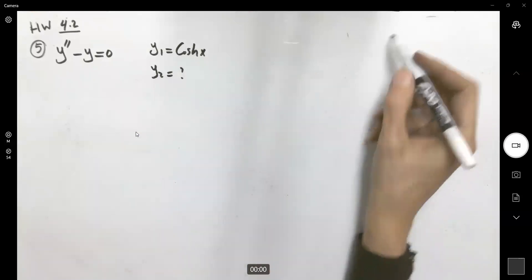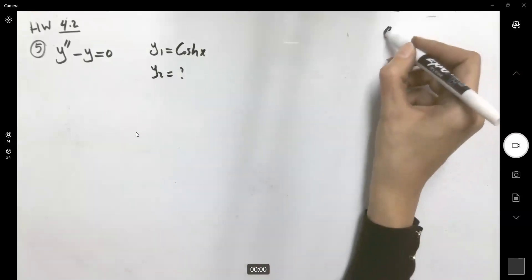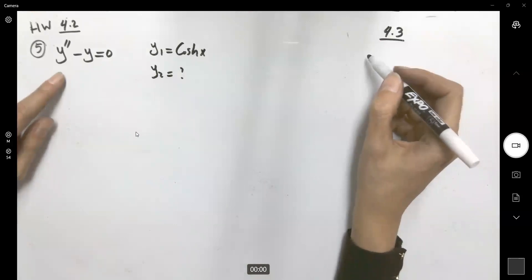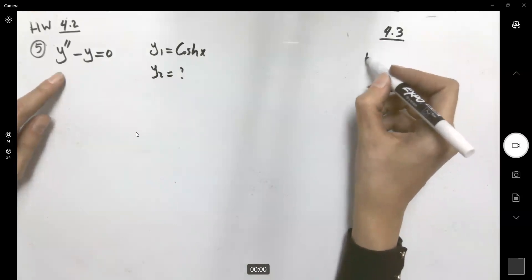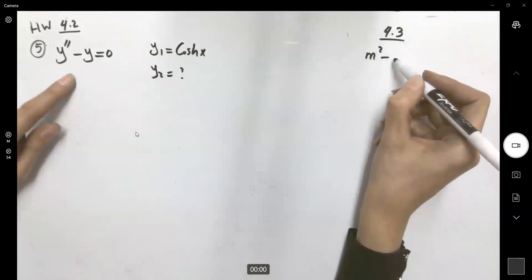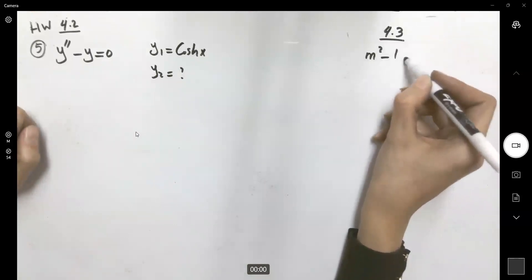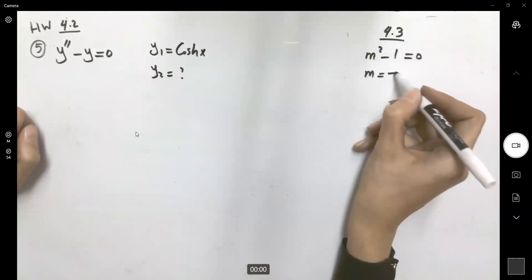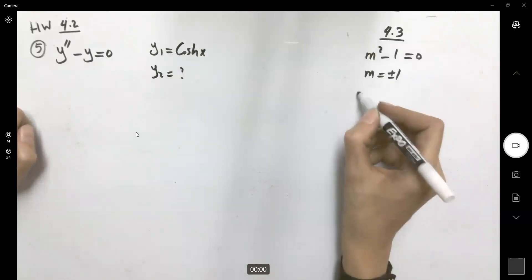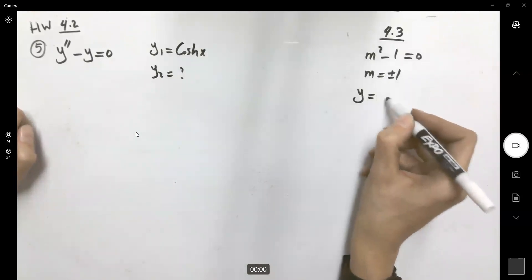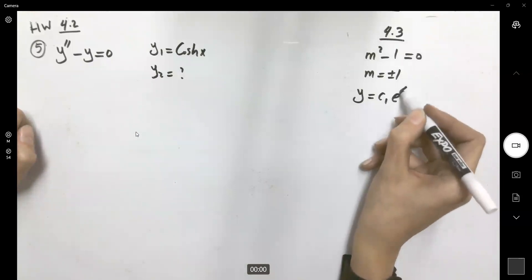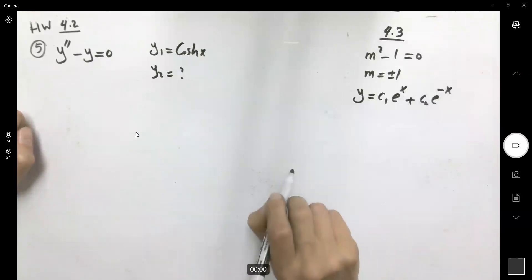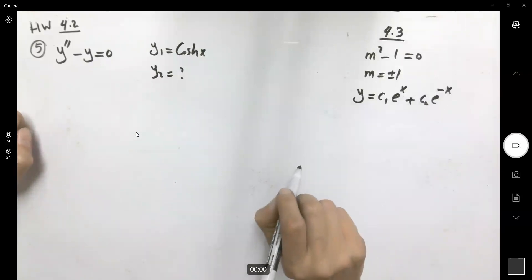From section 4.3 we can form the auxiliary equation m squared minus 1 equal to 0, so m is plus or minus 1. We expect the general solution to be c1 e to the x plus c2 e to the minus x.